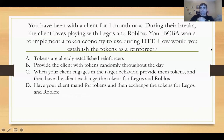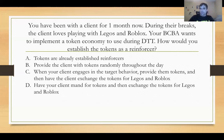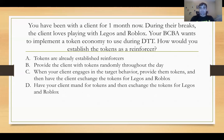Question: you have been with a client for one month. During their breaks, the client loves playing with Legos and Roblox. Your BCBA wants to implement a token economy during DTT. How would you establish the tokens as a reinforcer? Answer A says tokens are already established reinforcers — but are tokens primary or secondary? Tokens are secondary; they are not already established. That's what we're trying to accomplish — we need to establish them through pairing and learning. So A is out. B says provide the client with tokens randomly throughout the day. Are you actually pairing these tokens with anything purposefully? No — you need to have a plan. So B is out.